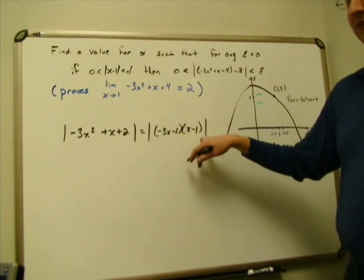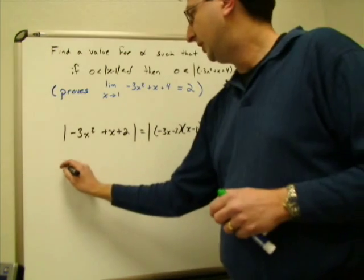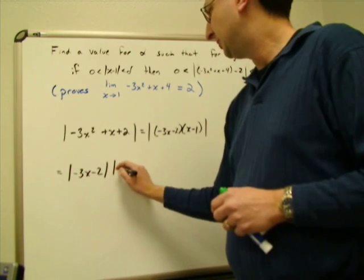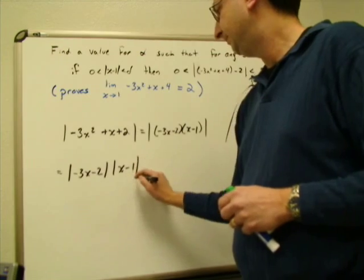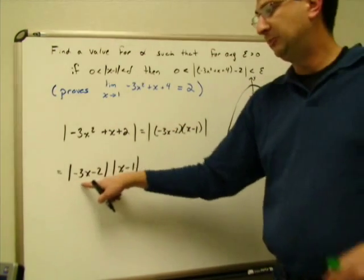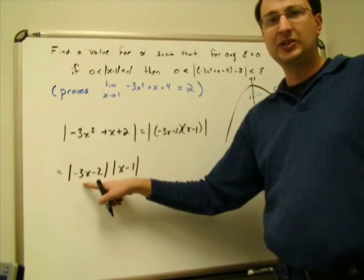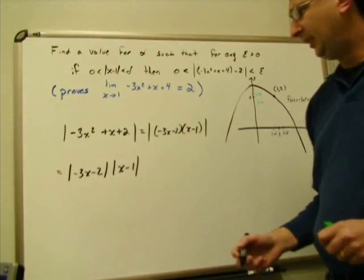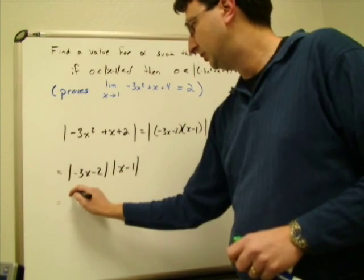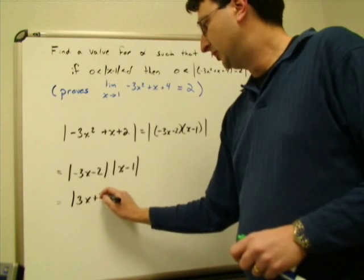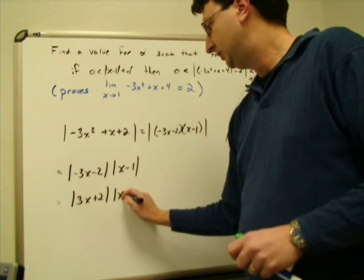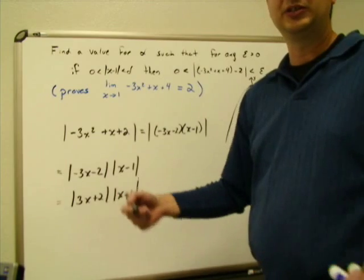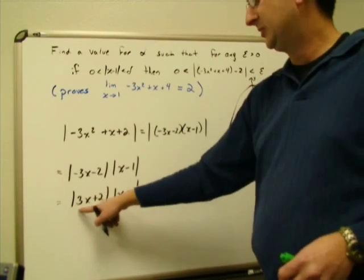Because we have a product under the absolute value, we can split it into the absolute value of negative three x minus two times the absolute value of x minus one. So we have our absolute value of x minus one isolated. The remaining piece, absolute value of negative three x minus two, using absolute value rules equals the absolute value of three x plus two, since the negative one pulls out.